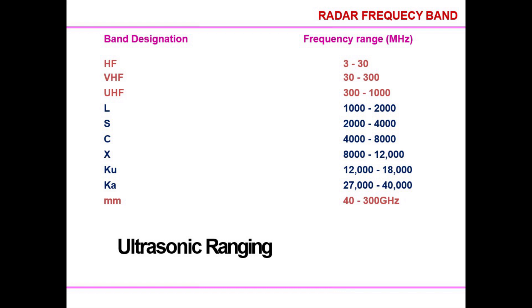To suppress the unwanted signal clutter, we use FIR filters. FIR stands for Finite Impulse Response. The band used is of radio frequency, which includes L-band, S-band, C-band, and X-band. The frequencies corresponding to each of these bands are given ahead.